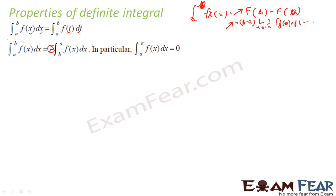That also implies: if you put b equal to a, you get the integral of f dx from a to a is 0. Logically, also if you're integrating from a point to that same point, there is no area covered, so you get 0. You can also derive it: putting b equal to a gives integral from a to a equals minus of integral from a to a, so 2 times the integral from a to a equals 0, meaning the integral from a to a is 0.